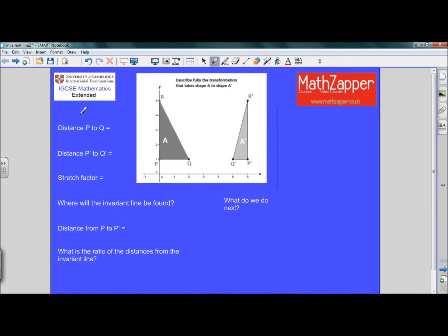University of Cambridge, International Examinations, IGCSE Mathematics. This is a problem from the extended course. We're asked to describe fully the transformation that takes shape A onto shape A dash.